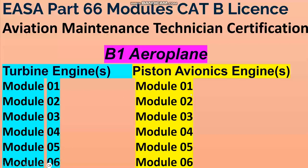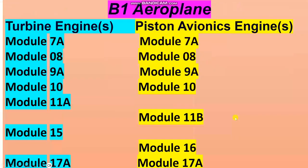The same modules one through six apply to both. Then continuing: seven A, eight, nine A, ten, eleven A — complete for the turbine and piston. For the turbine only: eleven B is for piston, not turbine. Module 15 is for turbine but not for piston. Module 17A for both.